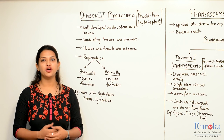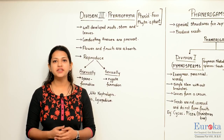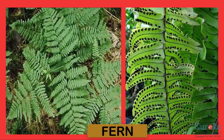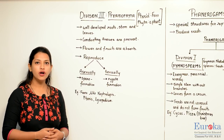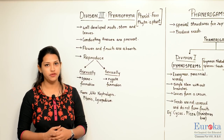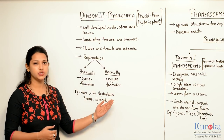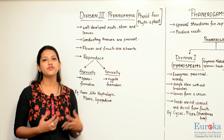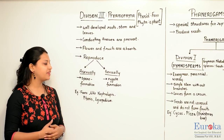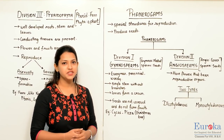The third division of cryptogams is Pteridophyta. 'Pterid' means fern and 'phyta' means a plant. You must have noticed a fern plant as an ornamental plant in a garden. They have small brown spores on the posterior part of their leaves. Pteridophyta have well-developed roots, stem and leaves, and also a well-developed conducting system — xylem and phloem. These plants do not bear flowers and fruit. They reproduce asexually by spore formation and sexually by zygote formation — the fusion of male and female gametes. Examples are ferns like Nephrolepis, Pteris and Lycopodium.